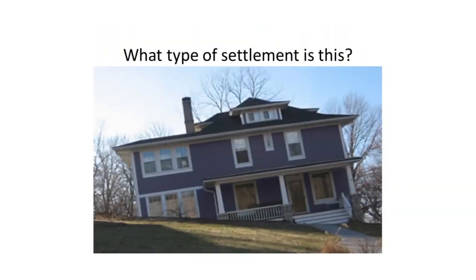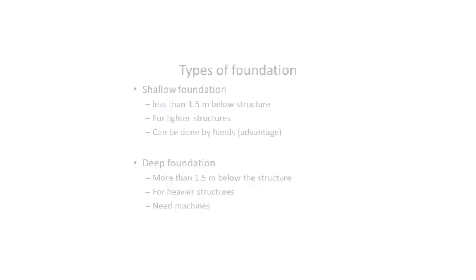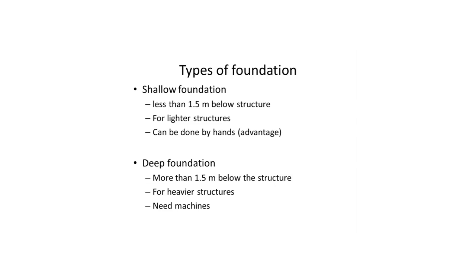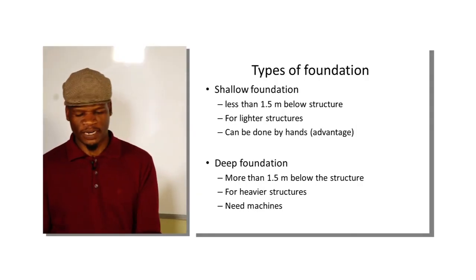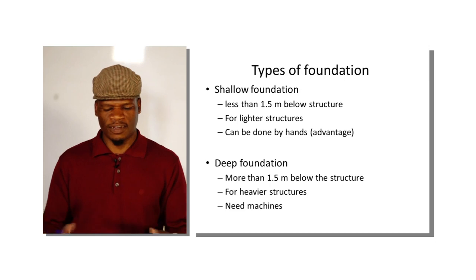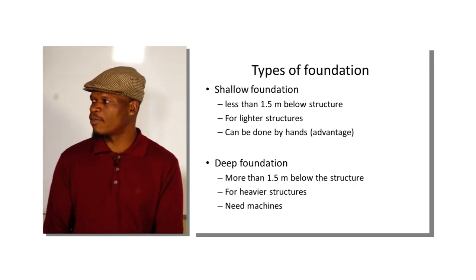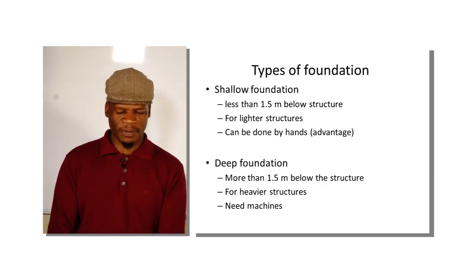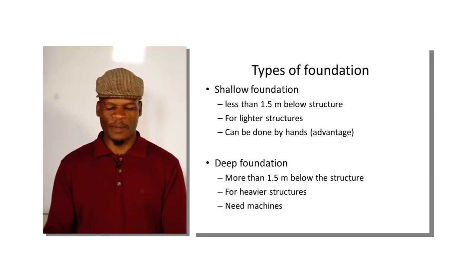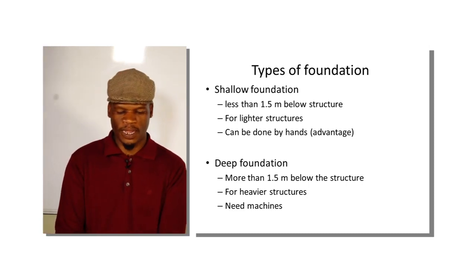In an exam, if you see a structure slanting on one side, you can identify it as differential settlement. Now for the types of foundation: they are divided into two groups — shallow foundation and deep foundation. Shallow foundation is a light type that you can dig by hand, normally less than 1.5 meters deep. Once it exceeds 1.5 meters and you need excavation equipment like bulldozers, that is considered a deep foundation.